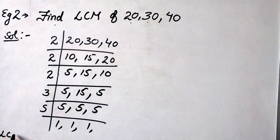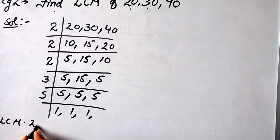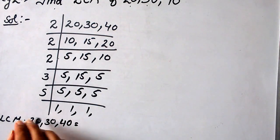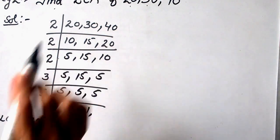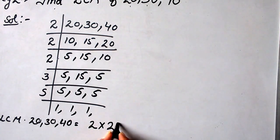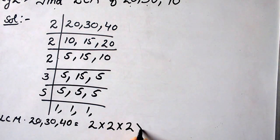So LCM of 20, 30 and 40 will be calculated as the multiplication of the prime numbers: 2 into 2 into 2 into 3 into 5. When we calculate this, we get 120.